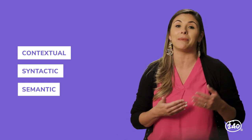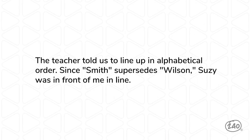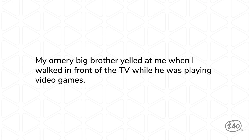Here's an example: "The teacher told us to line up in alphabetical order. Since Smith supersedes Wilson, Susie was in front of me in line." A reader could use their understanding of alphabetical order and the context clue "in front of me" to infer the meaning of supersede as "coming before." Here's a bonus example. For this one, the placement of the word within the syntax of the sentence will be key: "My ornery big brother yelled at me when I walked in front of the TV while he was playing video games." A reader who recognizes that ornery is an adjective describing the author's big brother could use the context clue "yelled at me" to infer that ornery means something negative.